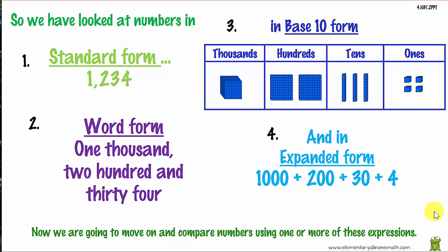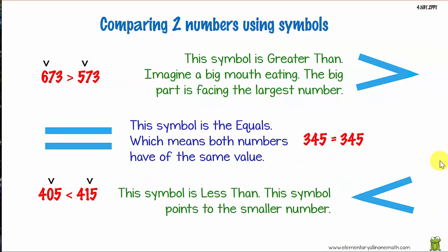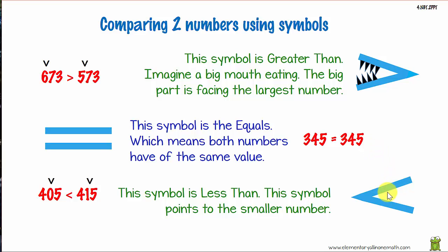We'll be comparing two numbers using symbols. Symbols are a big part of maths and it's important for us to learn them. This symbol here is the greater than symbol — imagine a big mouth eating. The big open part faces the larger number, as you can see, because 673 is greater than 573. Down here we have the equal sign, meaning both numbers have the same value. And down here we have the less than symbol — the pointy part points to the smaller number, as we can see: 405 is less than 415.